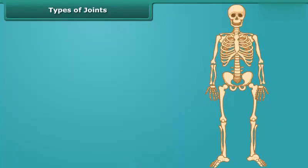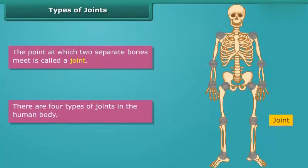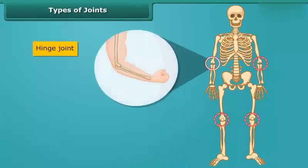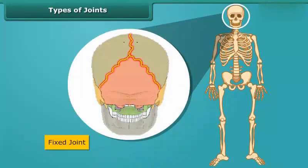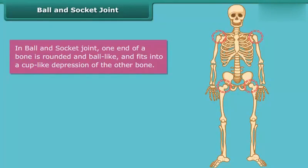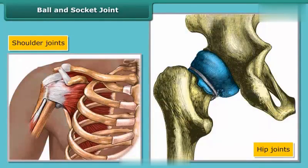Now it's time to know the joints. The point at which two separate bones meet is called a joint. There are four types of joints in the human body: ball and socket joint, hinge joint, pivotal joint, and fixed joint. In a ball and socket joint, one end of a bone is rounded and ball-like and fits into a cup-like depression of the other bone, providing movement in any direction. Shoulder joints and hip joints are examples.